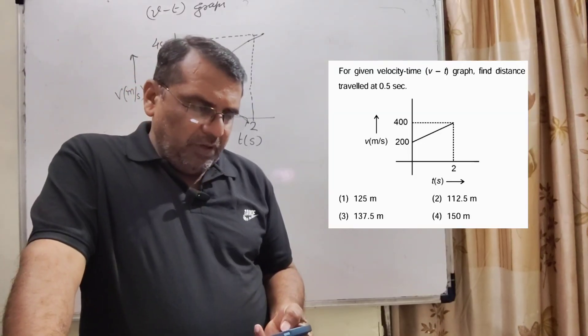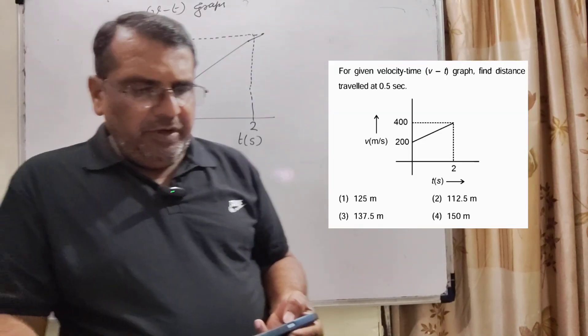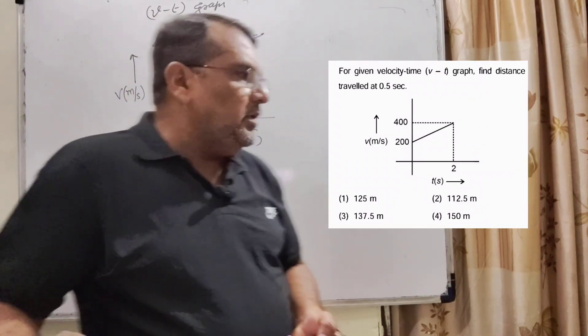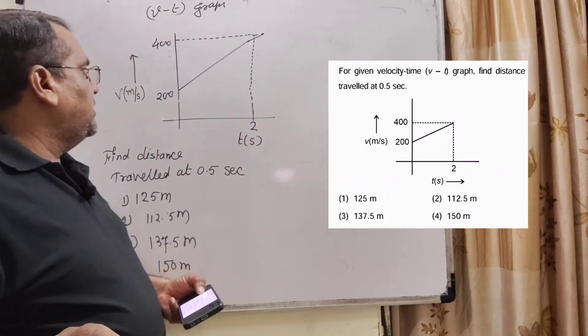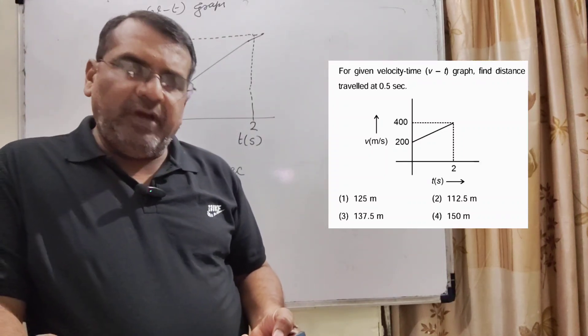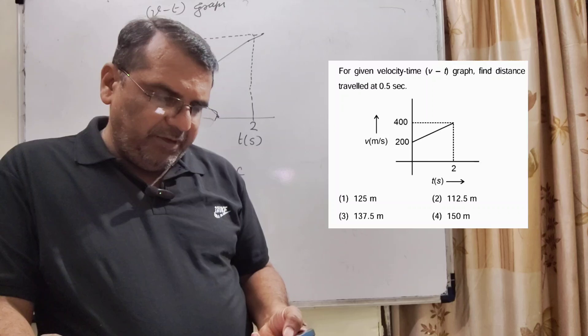Now here is the question. For given velocity time V-t graph, find distance travelled at 0.5 second. Here is the graph plotted between velocity and time. And options are given. Option 1, 125 meter. Option 2nd, 112.5 meter.